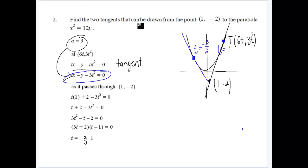In the next question, we've got find two tangents drawn from that point to this parabola x squared equals 12y. And as we've just said, any point that we've got there, we can draw two tangents to that. So in the general form, we know that a is equal to 3.